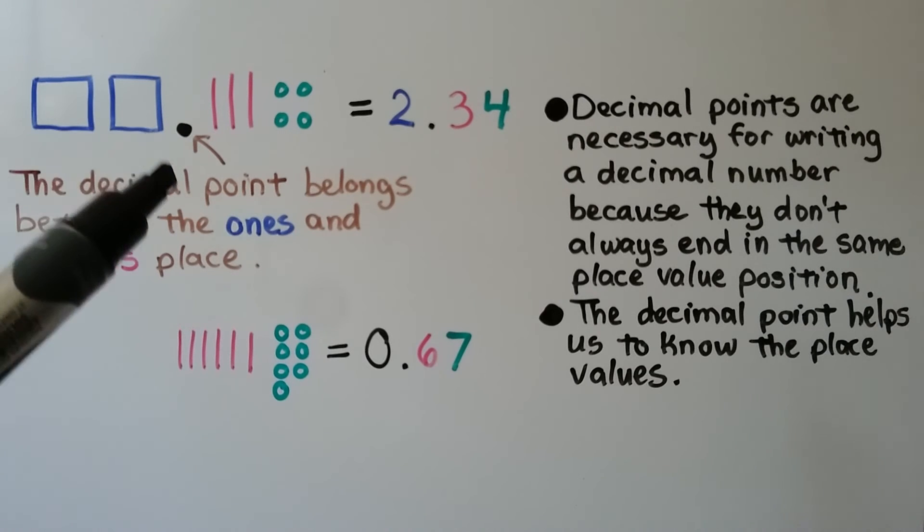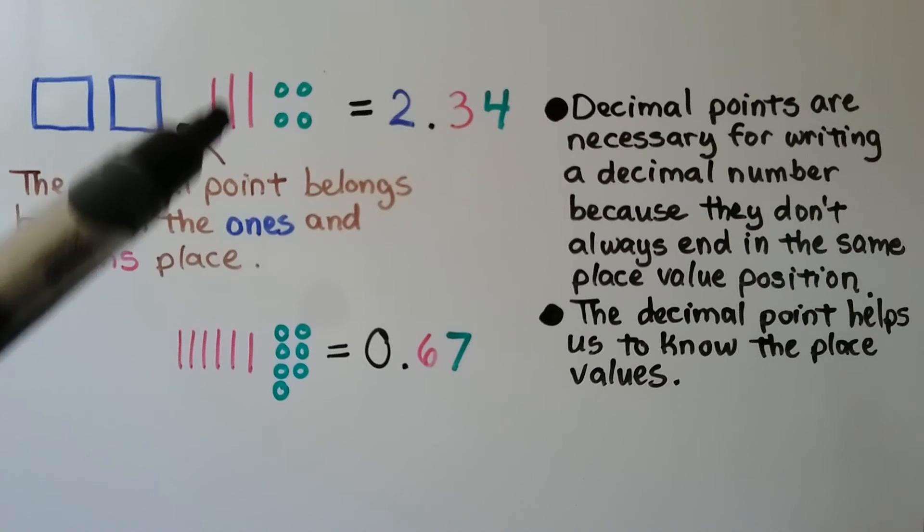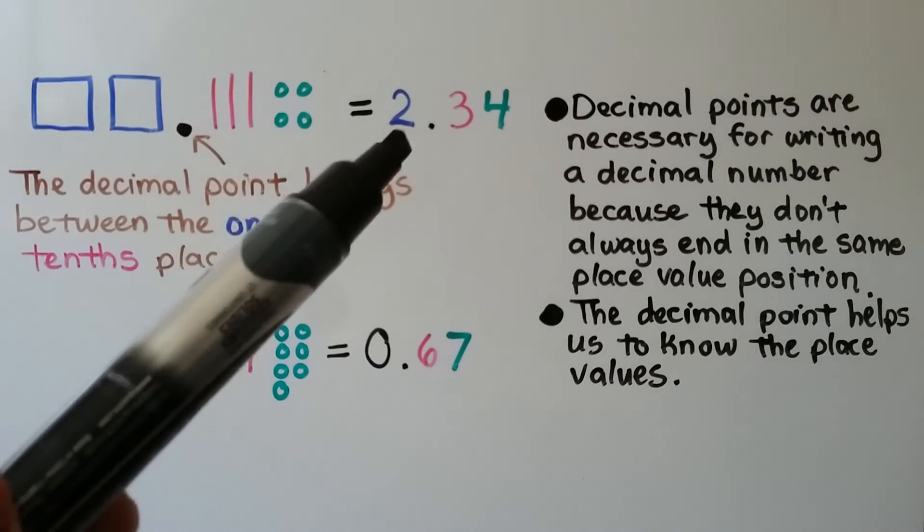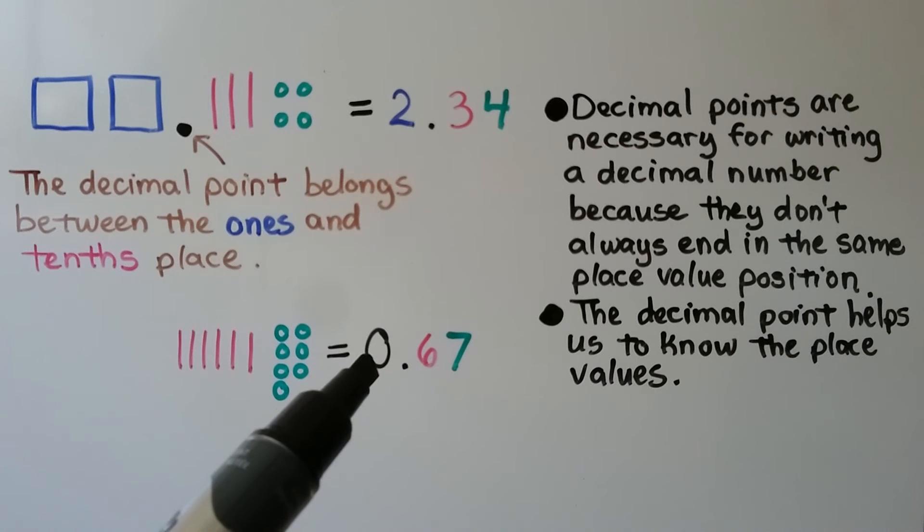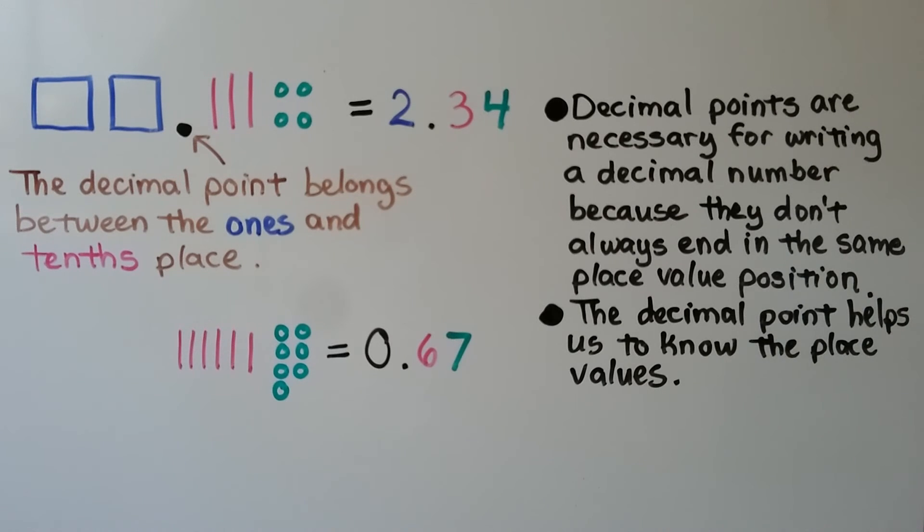Here we have 2 whole, then a decimal point, 3 tenths and 4 hundredths. That's 2 and 34 hundredths. Here we just have 6 tenths and 7 hundredths. We put a 0 in the 1s place, a decimal point, and the 67 hundredths. Decimal points are necessary for writing a decimal number because they don't always end in the same place value position. The decimal point helps us to know the place values.